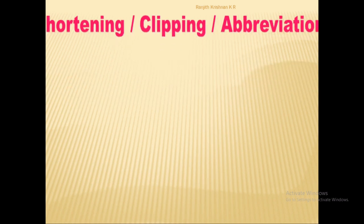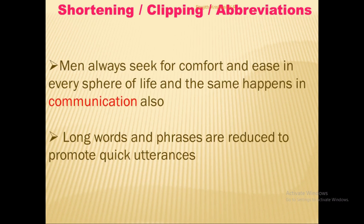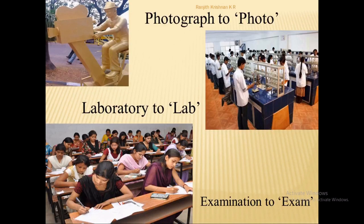The third process of word formation is shortening, also known as clipping or the use of abbreviations. Humans always seek comfort and ease, and in communication people try to shorten long words and phrases to promote quick utterances. For example, 'photograph' has been clipped to 'photo,' 'laboratory' becomes 'lab,' and 'examination' becomes 'exam.'